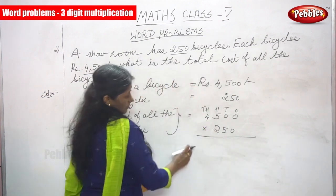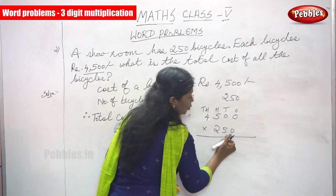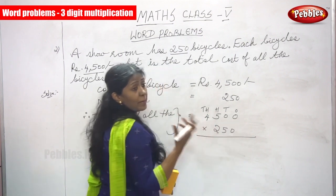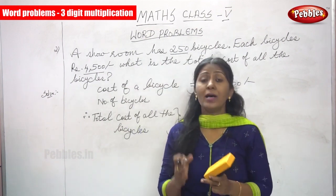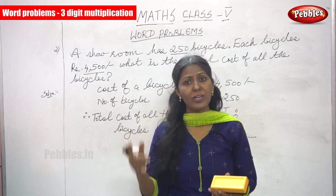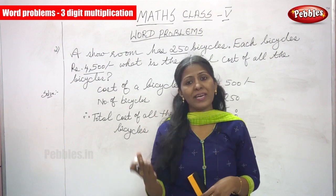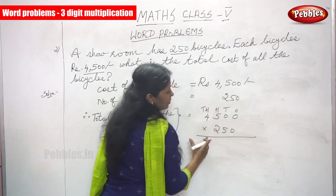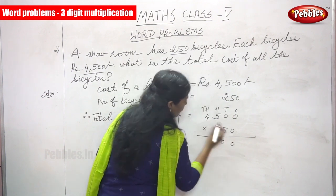Now I am going to start the multiplication. First, we multiply by the ones value. What is the value in the ones place? 0. Any number multiplied by 0 gives 0. For example, 0 into 8 is 0. So: 0 into 0 is 0, 0 into 0 is 0, 5 into 0 is 0, and 4 into 0 is 0.